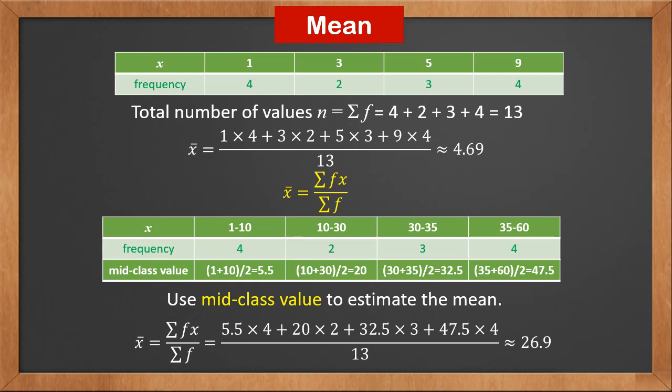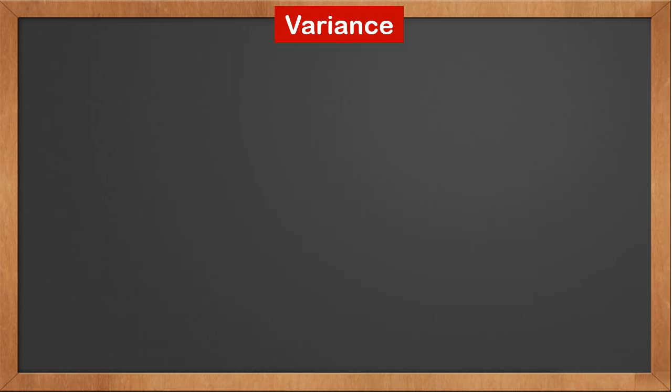Therefore, using the same formula, we estimate the mean x-bar of the second dataset as: 5.5 times 4, plus 20 times 2, plus 32.5 times 3, plus 47.5 times 4, divided by 13, which is 26.9.